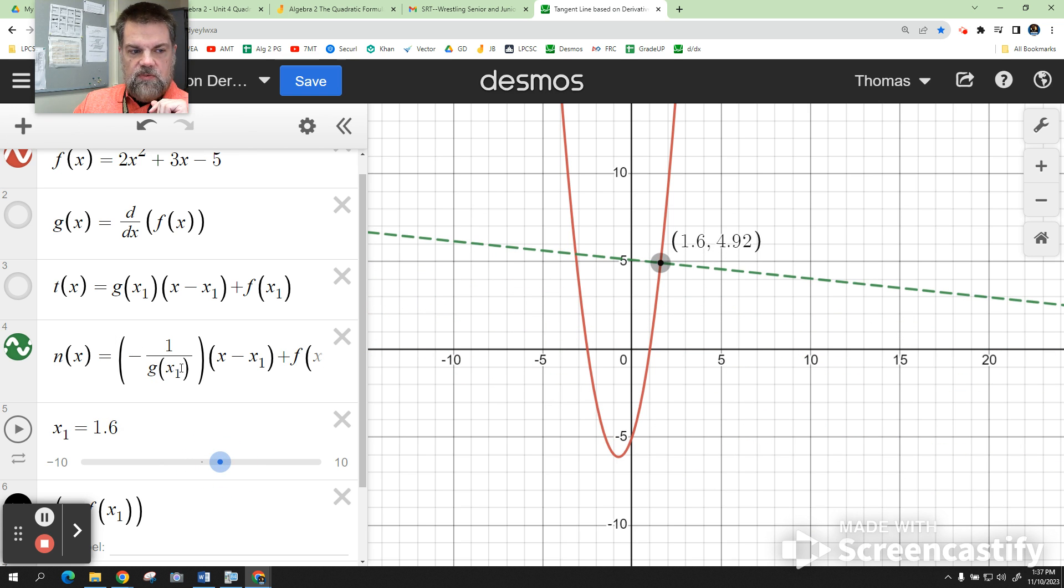I just put a negative reciprocal in there by taking my derivative evaluated at that value, putting it under one, and taking the negative of it. That gives me the normal line.